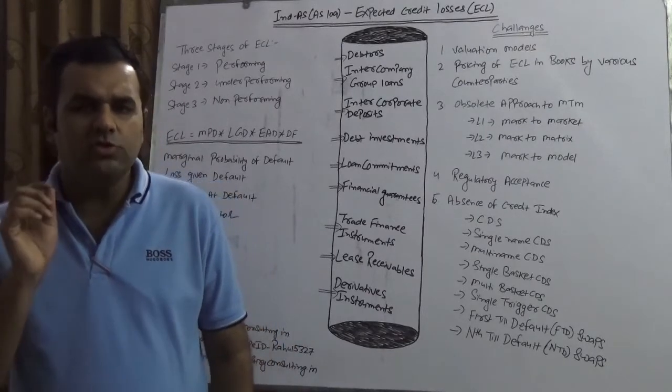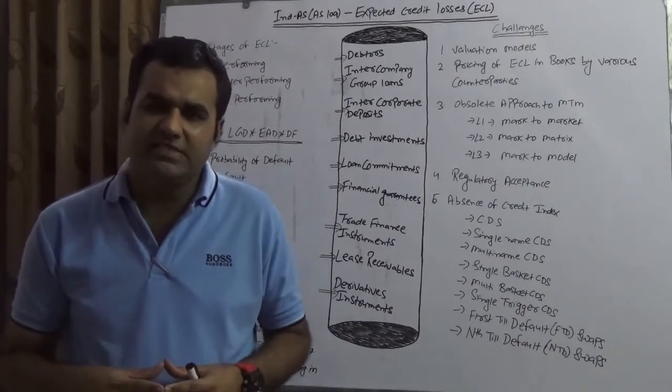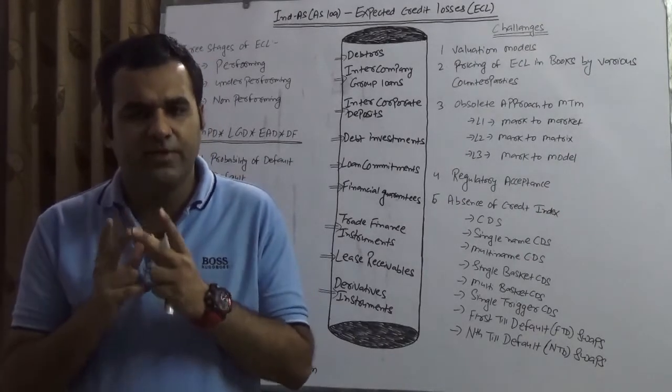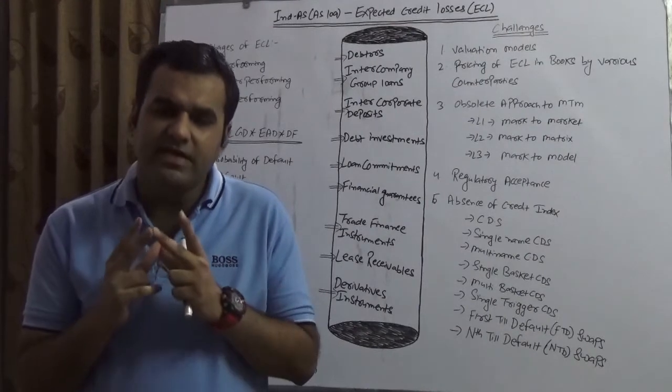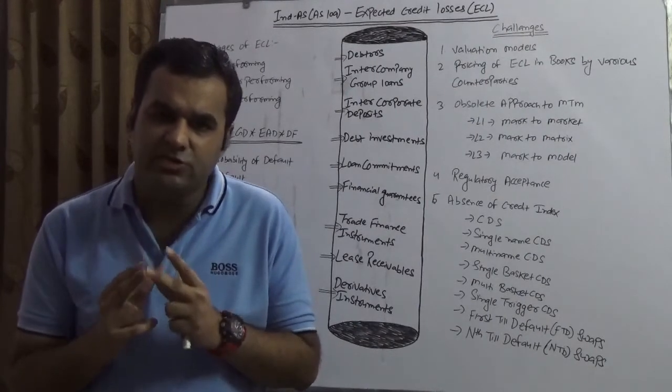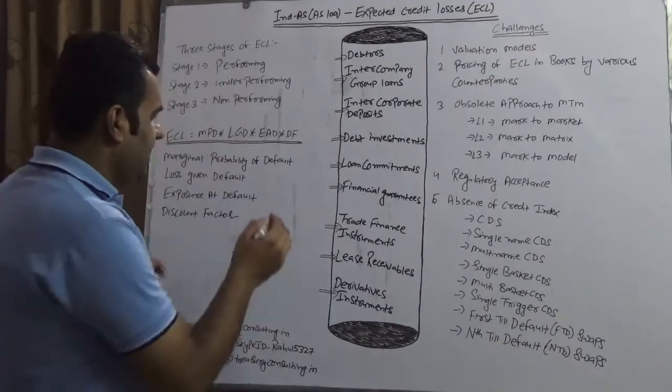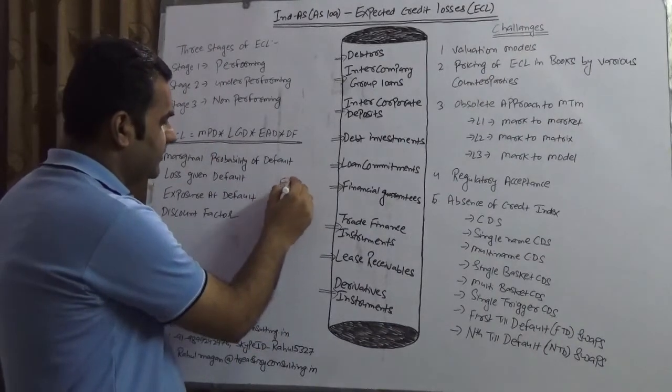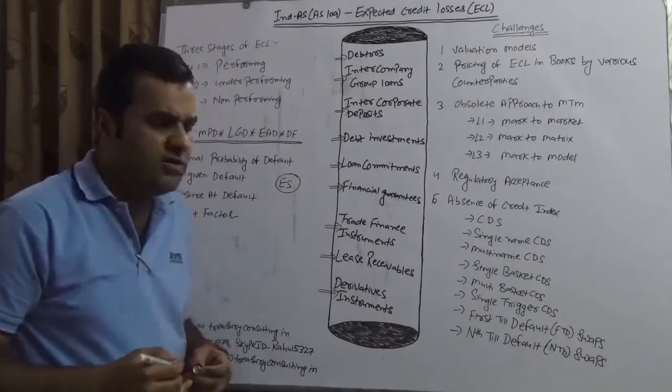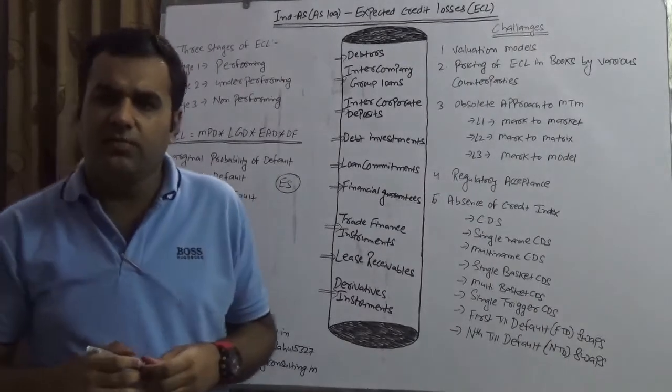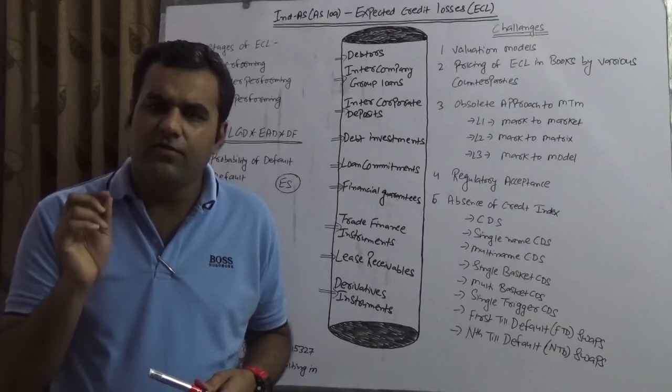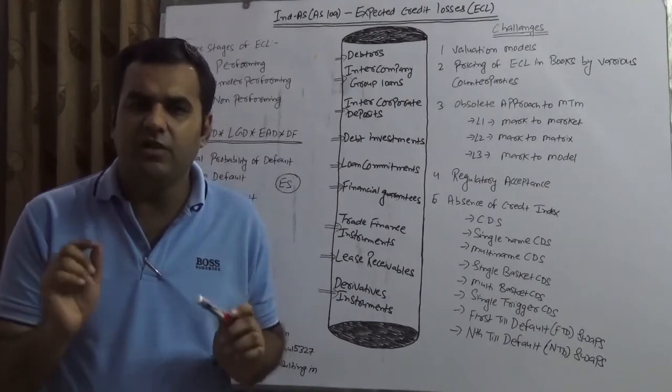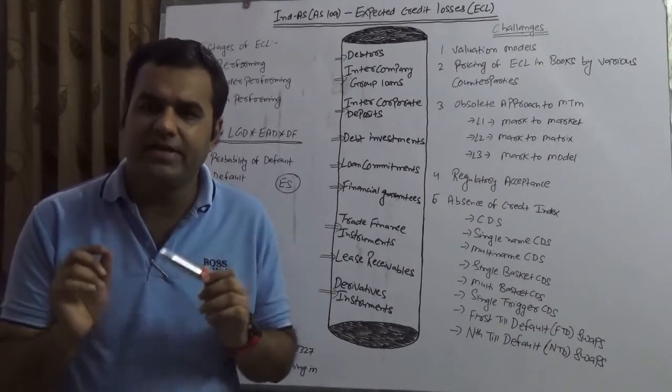My question to all those people who have drafted ECL 9 and all the banks and companies, in fact the big four people supporting ECL, is: why ECL? Why not Expected Shortfall, which I'm mentioning here, known as ES? The point of contention is that sitting today, the VAR is dead. Value at Risk is completely dead.